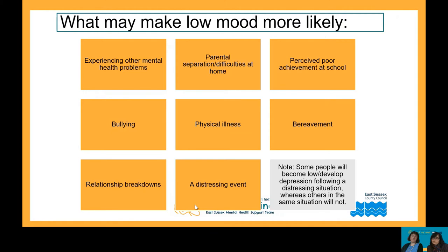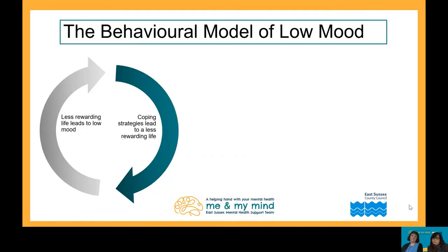The behavioral model of low mood suggests that low mood occurs when life becomes less rewarding or enjoyable. This might be caused by a major life event or something that seems quite small, like a falling out with a friend. In order to cope, people adopt coping strategies. Some of these might be harmful, such as self-harm or drug taking, and others are not harmful in themselves, such as watching Netflix, spending time alone, or gaming for hours.